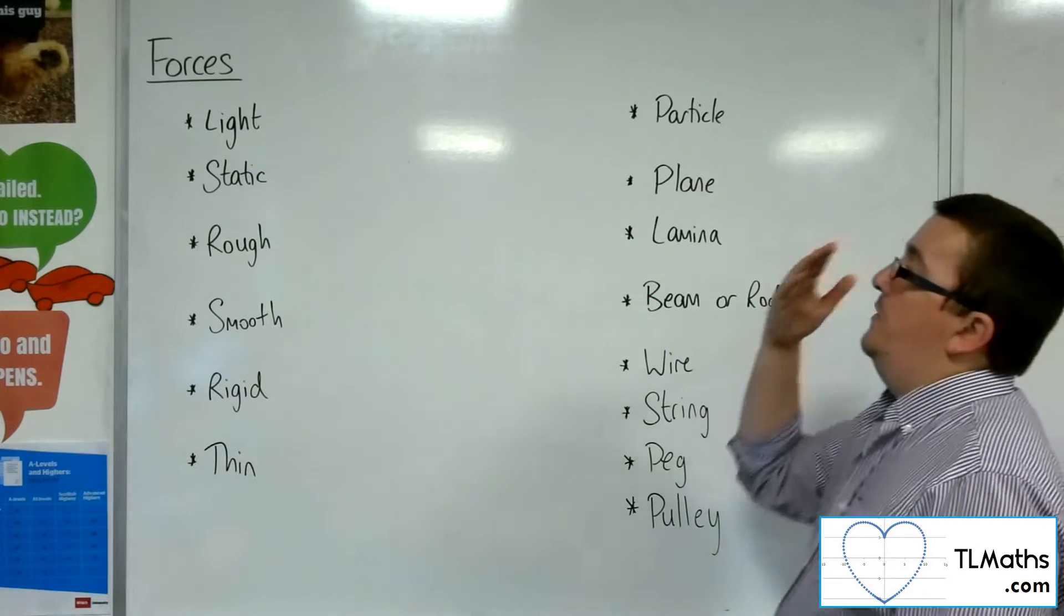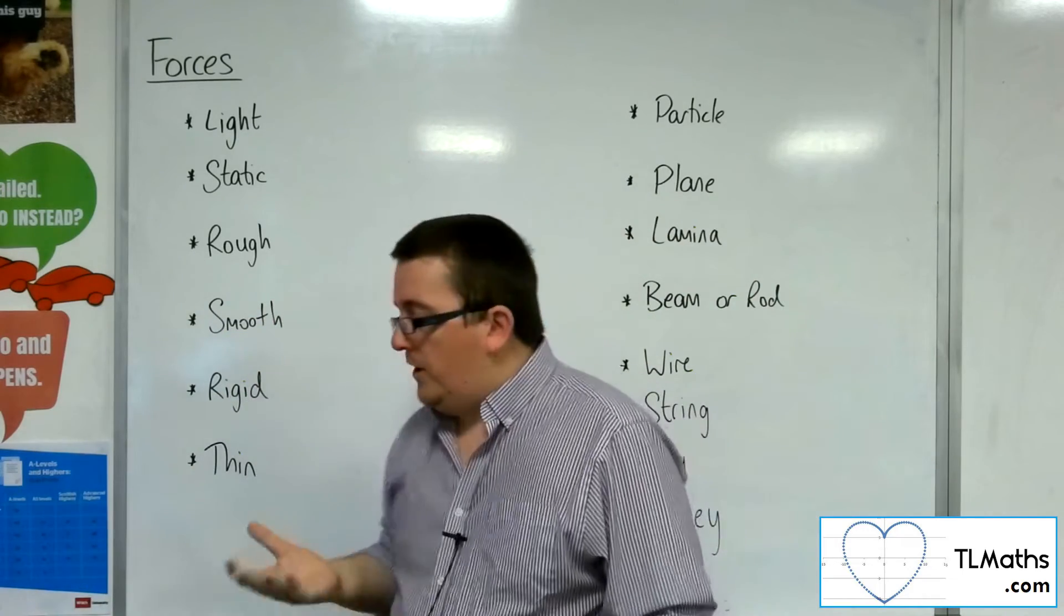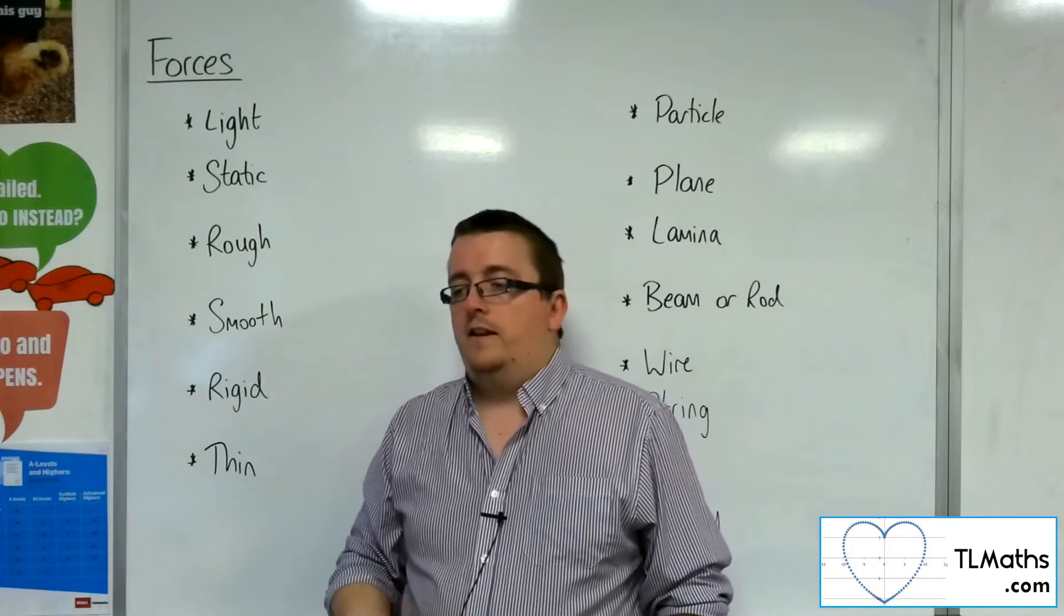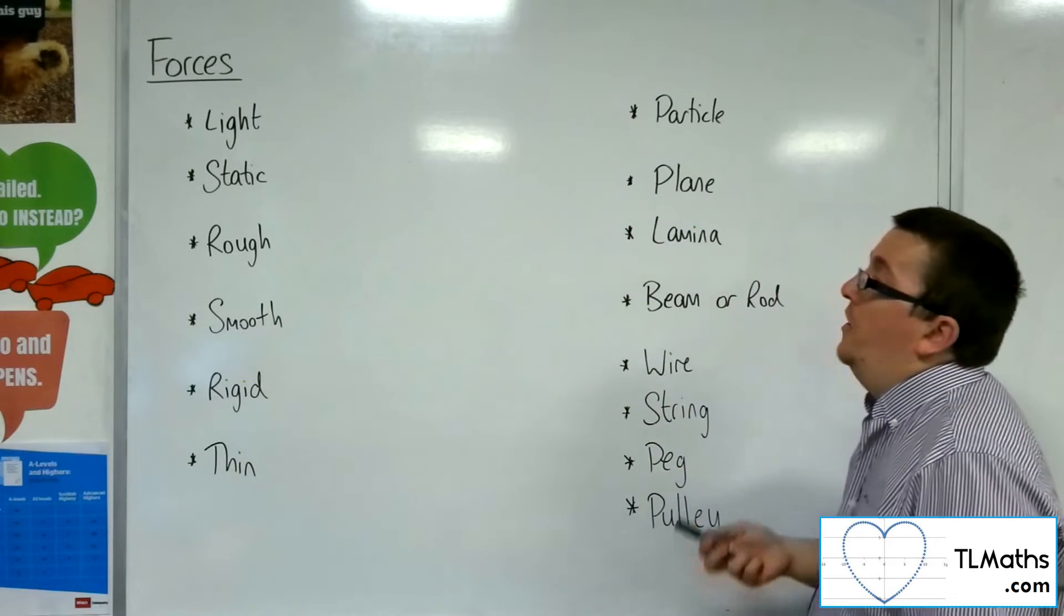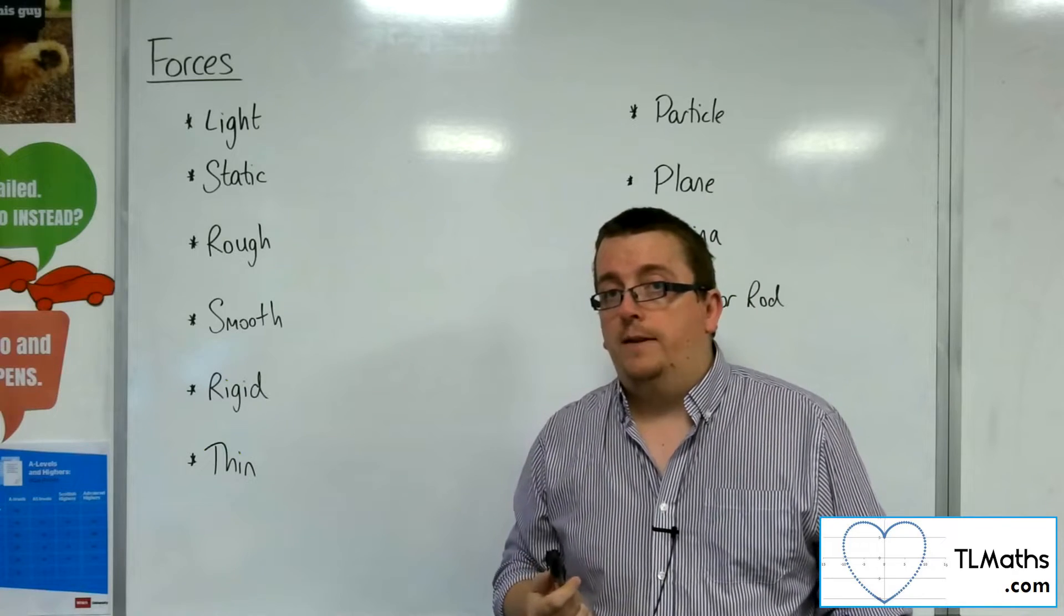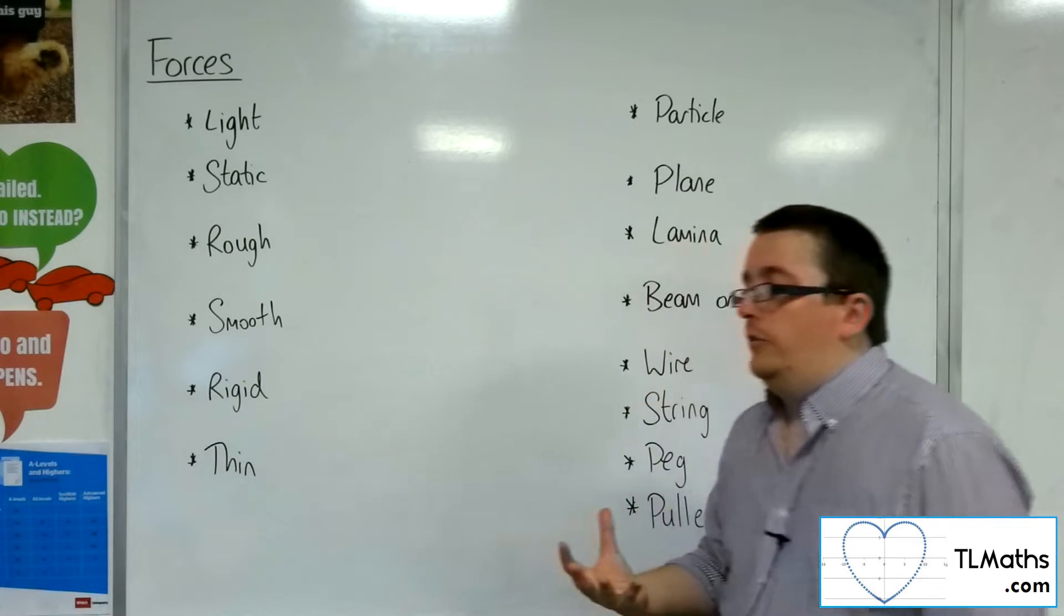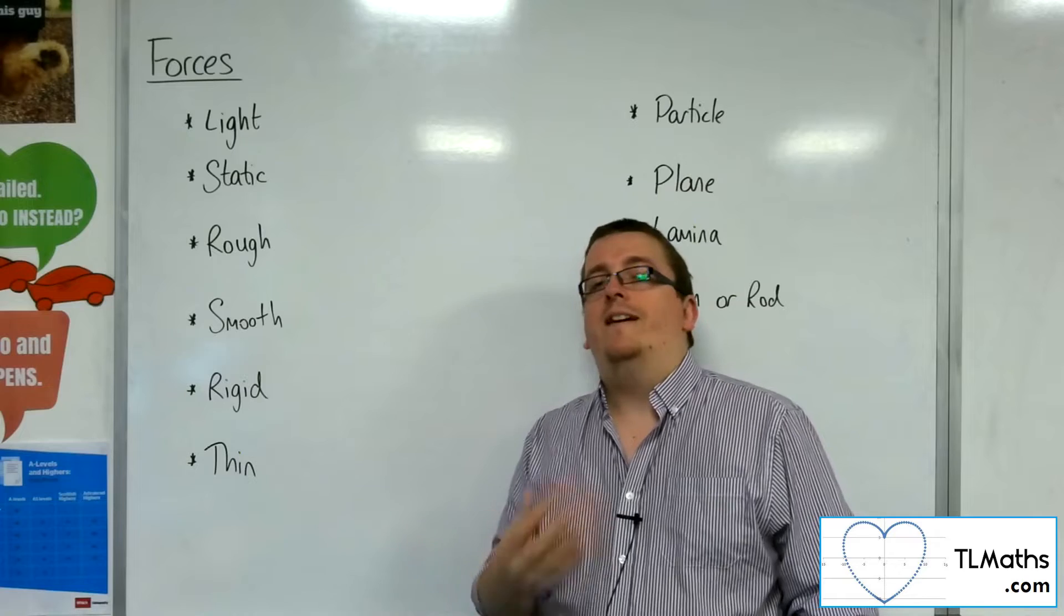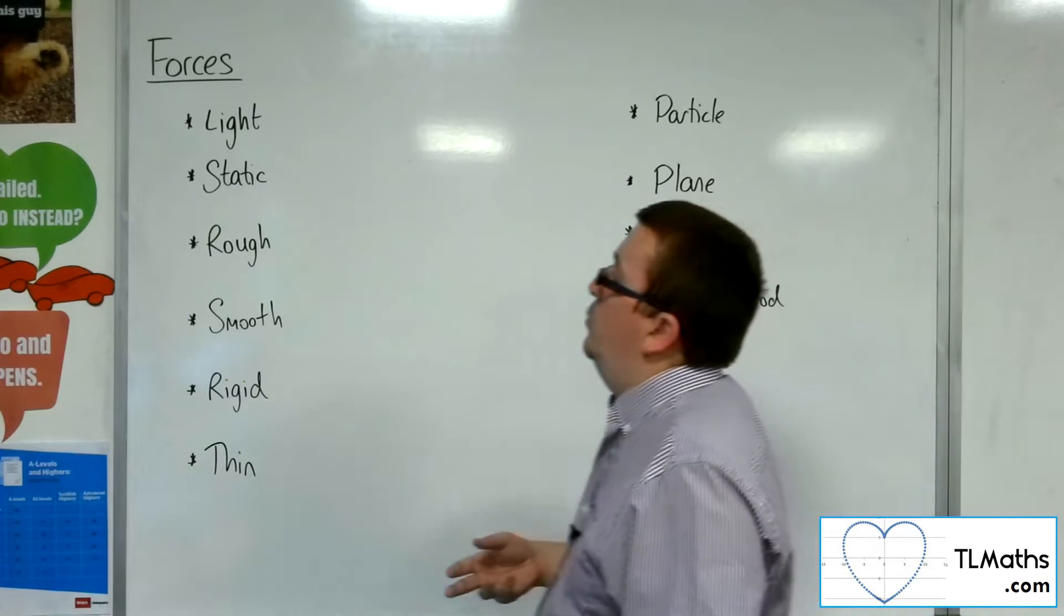So we're going to start off with light. What does it mean for something to be light? If I say that something is quite light, then it's not heavy. When I say it's light in a mechanics problem, I mean that it has negligible mass. So negligible mass, and it is something that I can ignore. The mass of the object I can ignore.